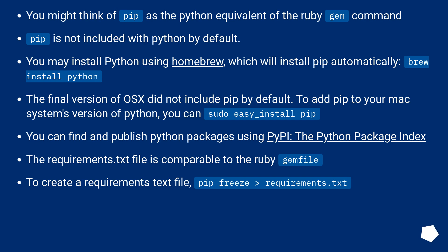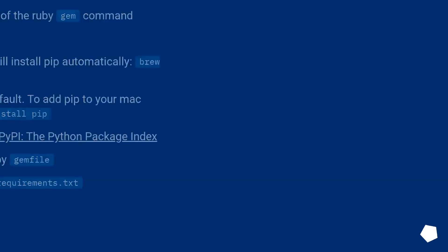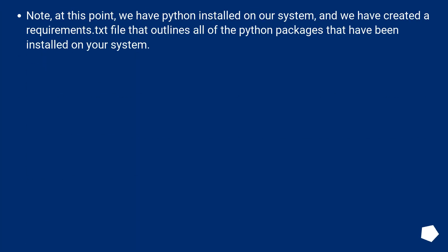You can find and publish Python packages using PyPI, the Python Package Index. The requirements.txt file is comparable to the Ruby Gemfile. To create a requirements.txt file, run: pip freeze > requirements.txt. At this point, we have Python installed on our system, and we have created a requirements.txt file that outlines all of the Python packages that have been installed on your system.